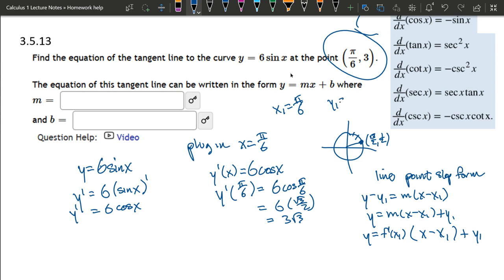So y₁ is 3. Let me plug all these in. f'(x₁), where x₁ is π/6, gives us our slope. So the equation is: y = 3√3(x - π/6) + 3.